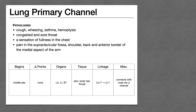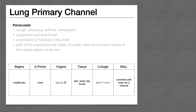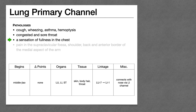Here we have an overview of the pathologies of the lung. Cough, wheezing, and asthma — because the lung controls respiration and has a descending action. Congested and sore throat — because the channel ascends to the throat. Fullness in the chest — because the channel makes that diamond pattern across the chest and because the lung is in the chest. And then just pain along the channel.